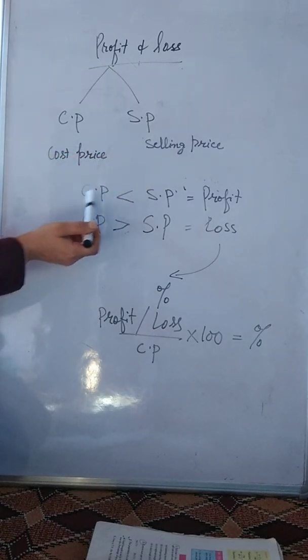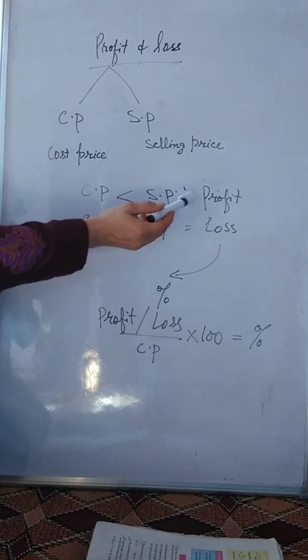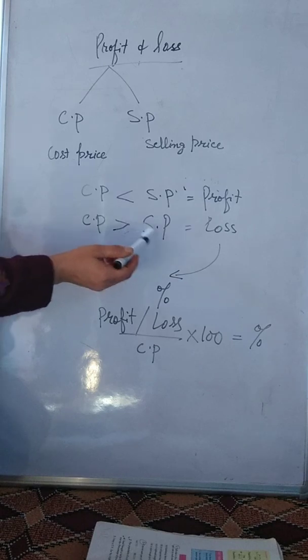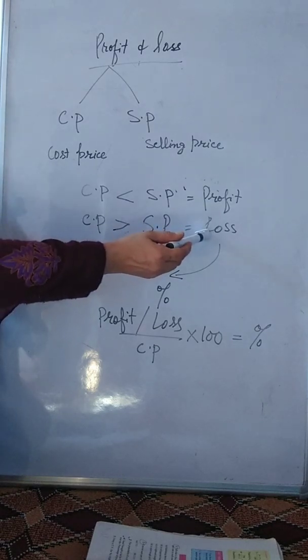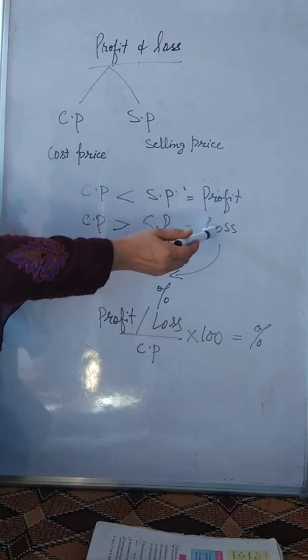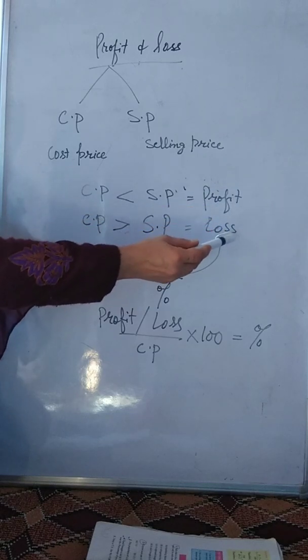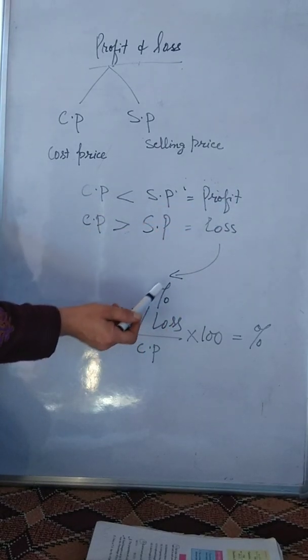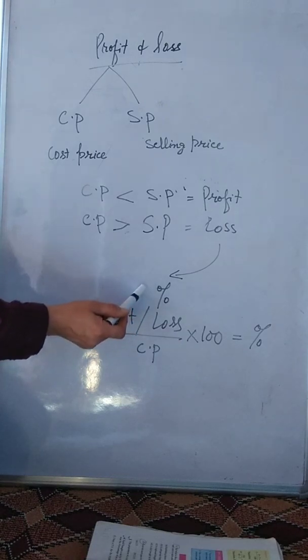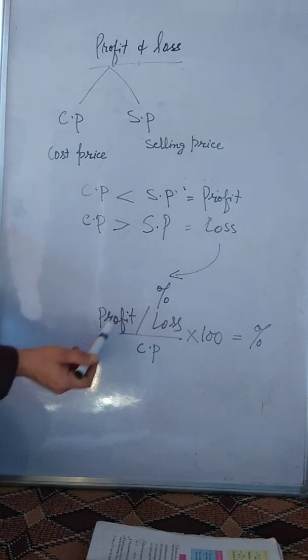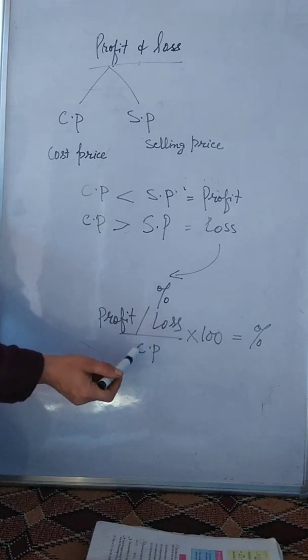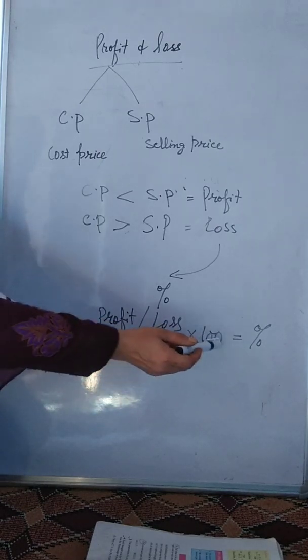When CP is less than SP, this means profit. And when CP is greater than SP, this means loss. Profit or loss, nafah or nuxan. Jab nafah or nuxan ho jata hai, uske baad hamein nikalna hota hai uski percentage. To uske liye formula hai, profit or loss divided by CP means actual cost into 100.